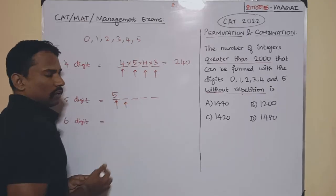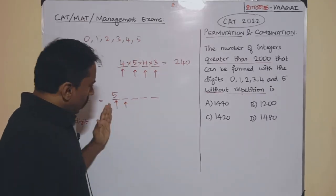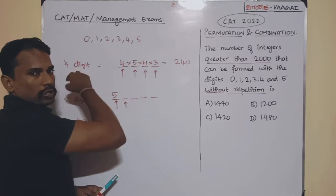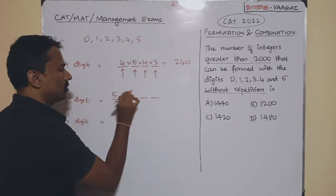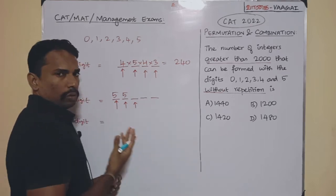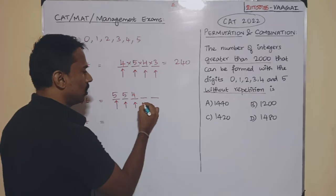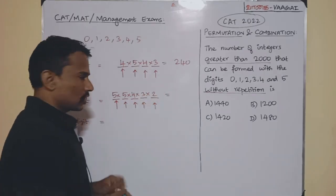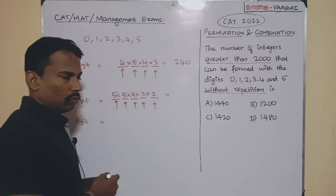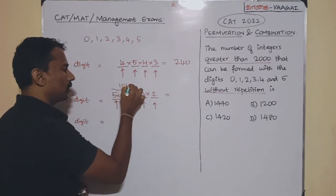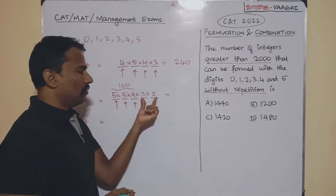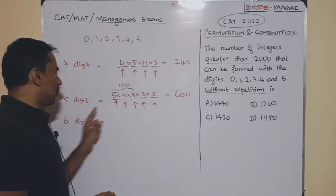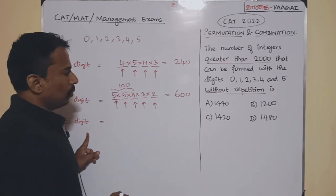After filling the first slot, the remaining 5 digits include 4 non-zero digits and zero. So the second slot has 5 ways, then 4 ways, 3 ways, and 2 ways for the last slot. Total five-digit numbers = 5 × 5 × 4 × 3 × 2 = 600.